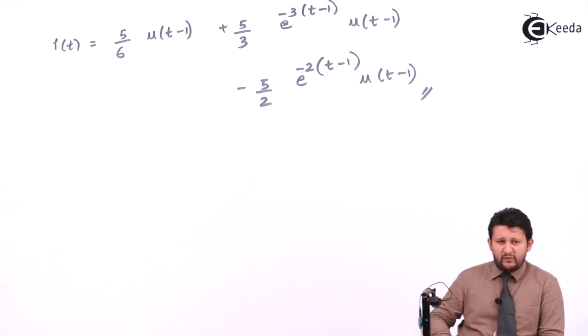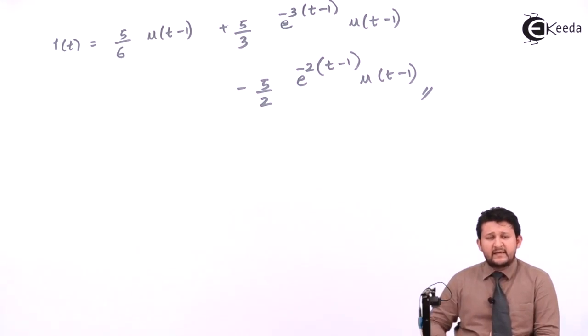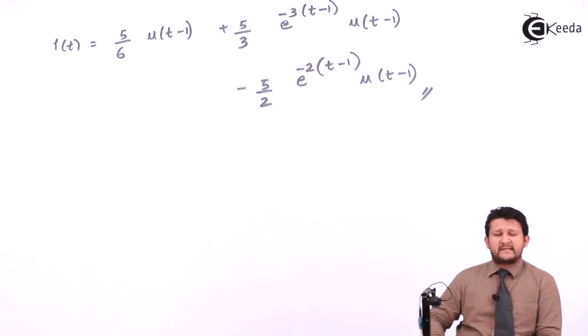Two things: for inductor, the L will be convert to LS. The capacitor, it will be 1 upon CS. For Laplace of R of t, 1 upon S square. Laplace of U of t, 1 upon S. Laplace of delta of t, 1. So this you need to remember for it.